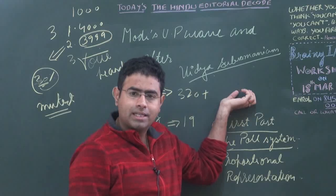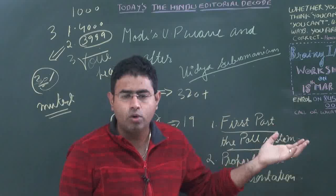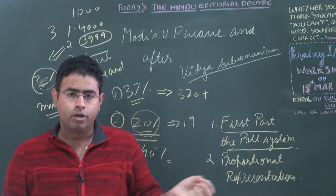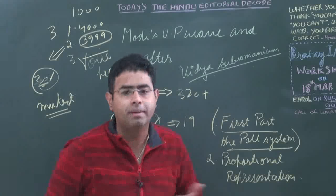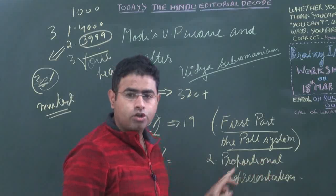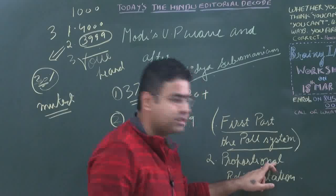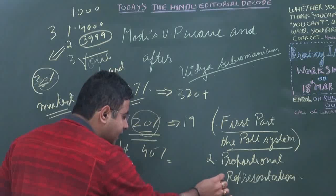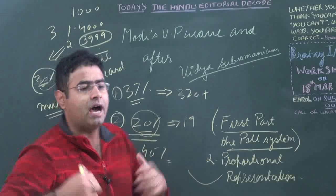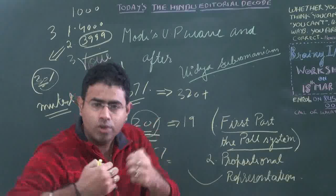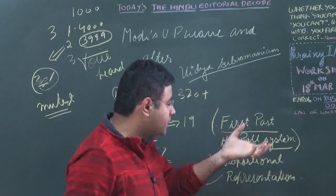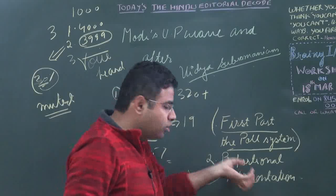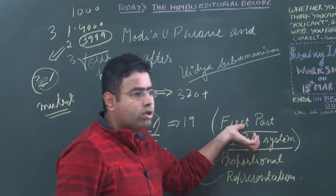In the First Past the Post system, when an MLA is elected, people can go to him directly and say: there are problems in our area — sanitation problems, water problems, transportation problems, electricity problems. People can directly assert accountability and control. But in proportional representation, though voices are heard, people cannot directly question any particular MLA — they have to question the political party and go to its headquarters, increasing the gap. So while proportional representation looks more democratic on the surface, it is lower on accountability. First Past the Post is higher on accountability but less representative.